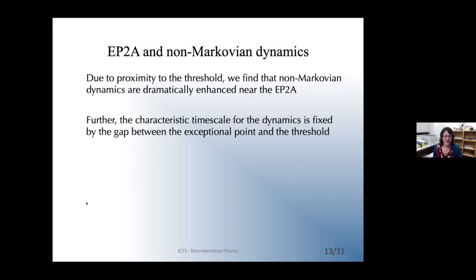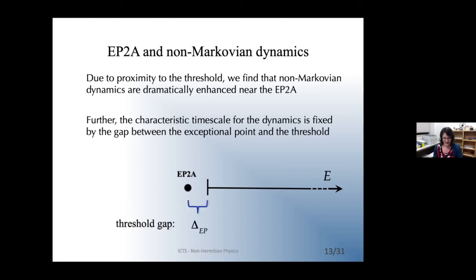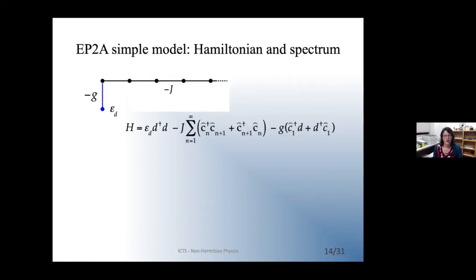The characteristic time scale for the dynamics is determined by the gap between the exceptional point eigenvalue and the threshold. The EP2a eigenvalue sits near the threshold, and the characteristic time scale is inversely related to this gap.